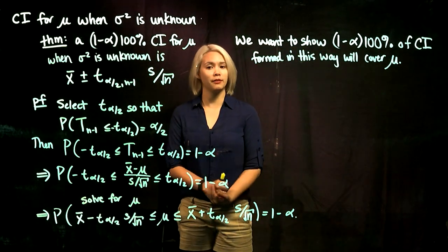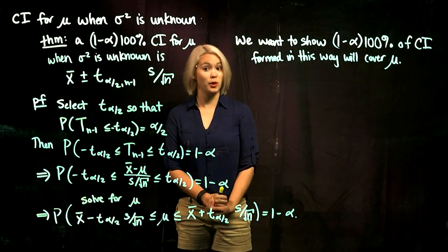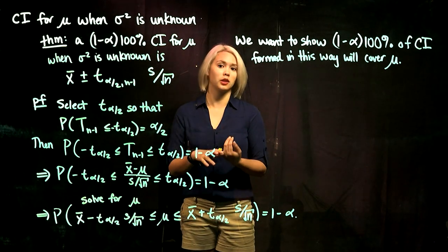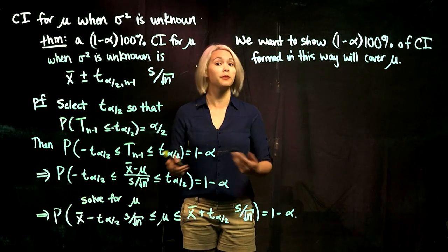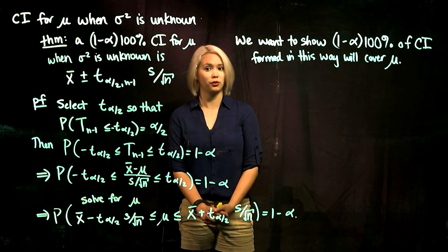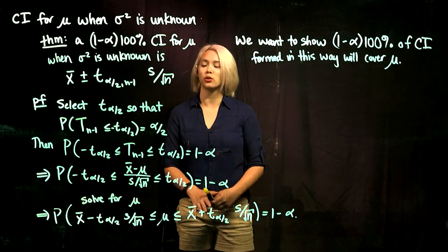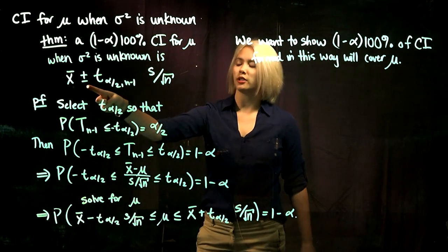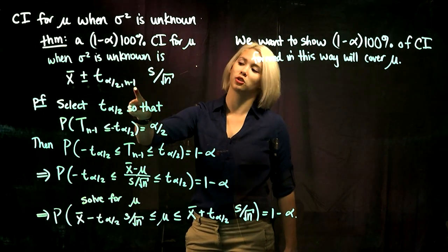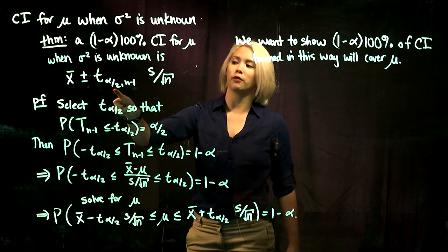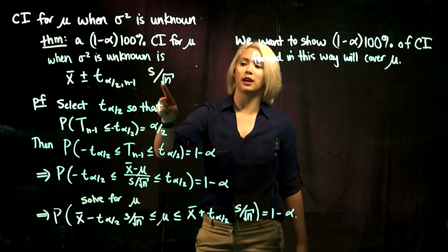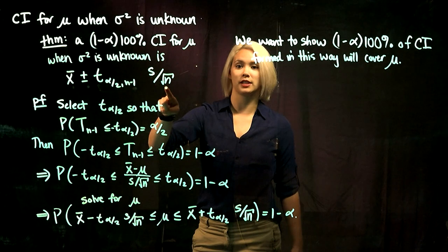In this video, we're talking about confidence intervals for mu when sigma squared is unknown. So mu is unknown and sigma squared is unknown. In the previous video, I said that if you want to have a 1 minus alpha times 100% confidence interval for mu, that is going to be x bar plus or minus the specially chosen quantile from a t distribution with n minus 1 degrees of freedom, so that we have alpha over 2 in the tail, times the sample standard deviation divided by the square root of the sample size.